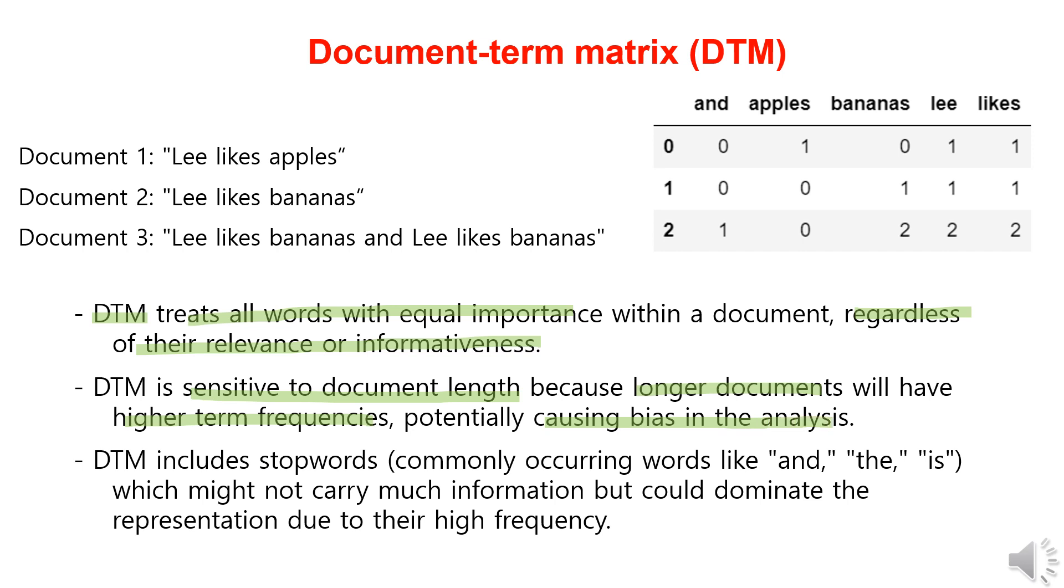Furthermore, stop words like and, the, is, etc. typically don't carry much information, but tend to appear frequently. Treating these words equally with other words in the document term matrix can dominate the representation due to their high frequency.